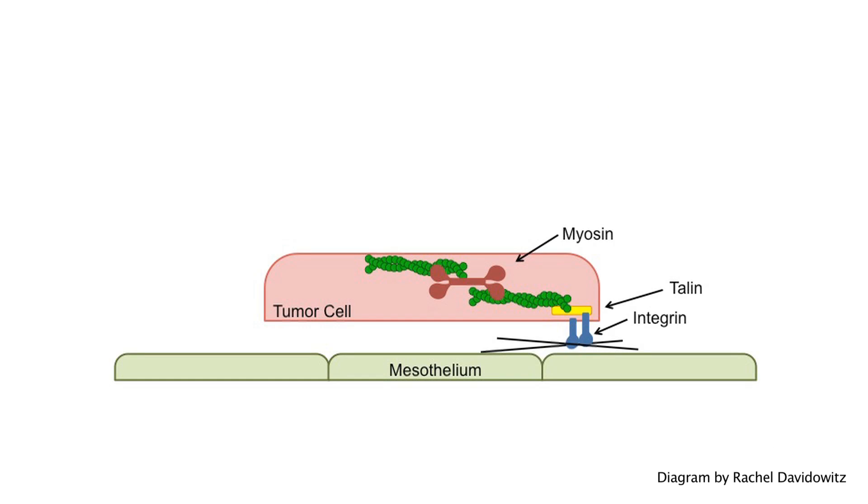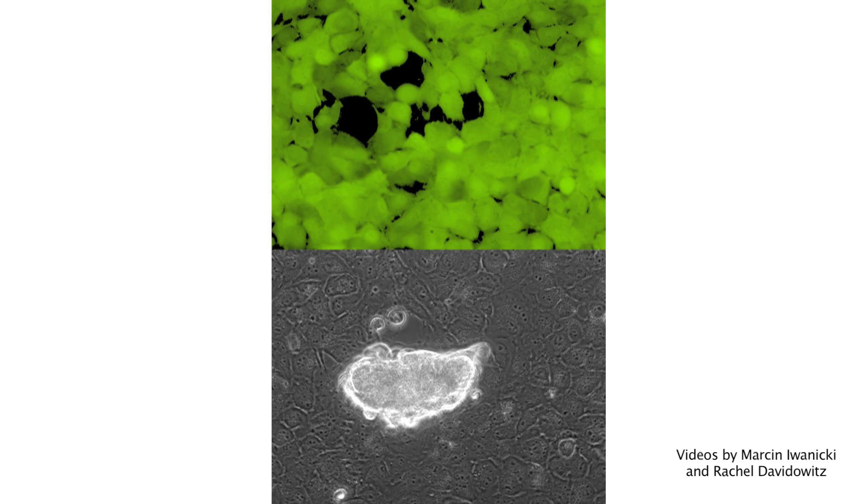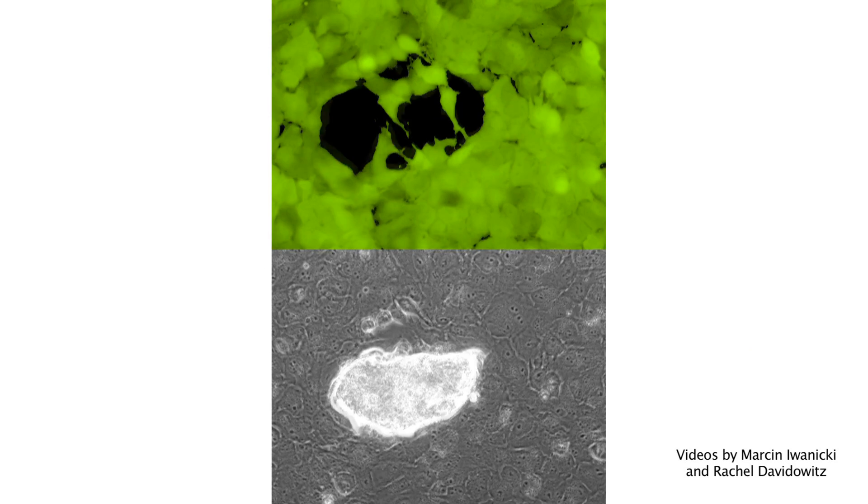This diagram shows how integrin, talin, and myosin interact. Integrin sticks out from the cancer cells and grabs hold of scaffolding surrounding the mesothelium. Myosin, which is a motor, pulls on integrin via talin. As a result, the protruding cancer cells gain traction and can now force mesothelial cells out of the way.